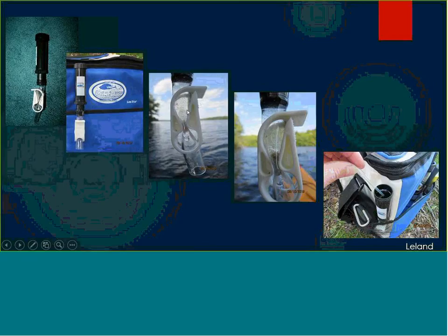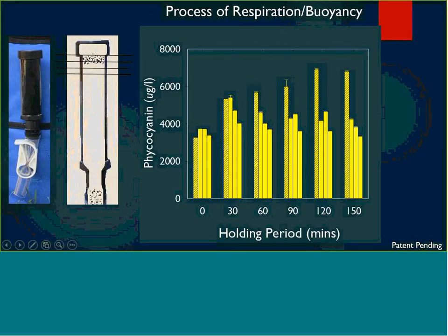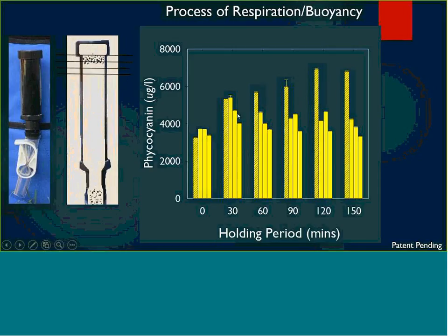What will happen is the zooplankton will migrate to the light and concentrate at the bottom of the sample tube, while your bloom-forming cyanobacteria will float through respiration and buoyancy to the surface. After a specific hold time, the tube will concentrate the cyanobacteria at the top and zooplankton will go to the bottom, giving you a more concentrated cyanobacteria population. For a microscope image, this is nice because you get rid of a lot of the non-cyanobacteria material, giving better image quality. Looking at the partitioning graph, after about a two-hour hold time, your phycocyanin reading goes up significantly.